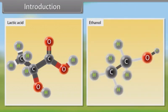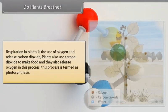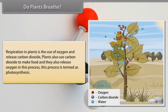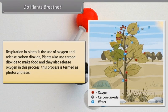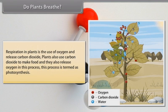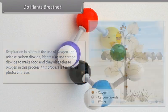Throughout this module, we learn respiration in plants. Respiration in plants is the use of oxygen and release of carbon dioxide. Plants also use carbon dioxide to make food and they also release oxygen in this process. This process is termed as photosynthesis.